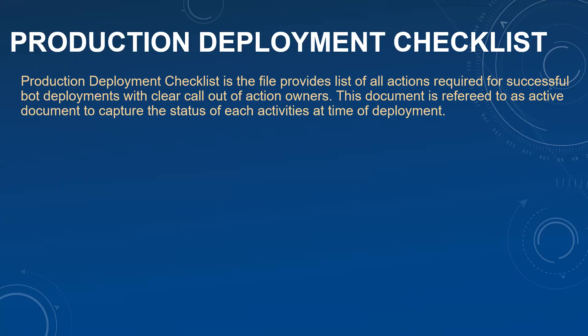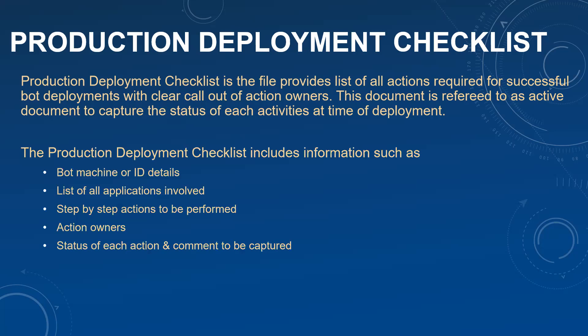When we look at all actions listed, it is also a clear call-out of who are the action owners for those actions, so there is no confusion at go-live about who needs to perform which actions. This document is referred to as an active document at the time of go-live to ensure each step is followed by the respective person and nothing is missed. It includes details such as bot machine IDs, list of applications involved, step-by-step actions, action owners, status of each action, and any observations or comments to be captured.